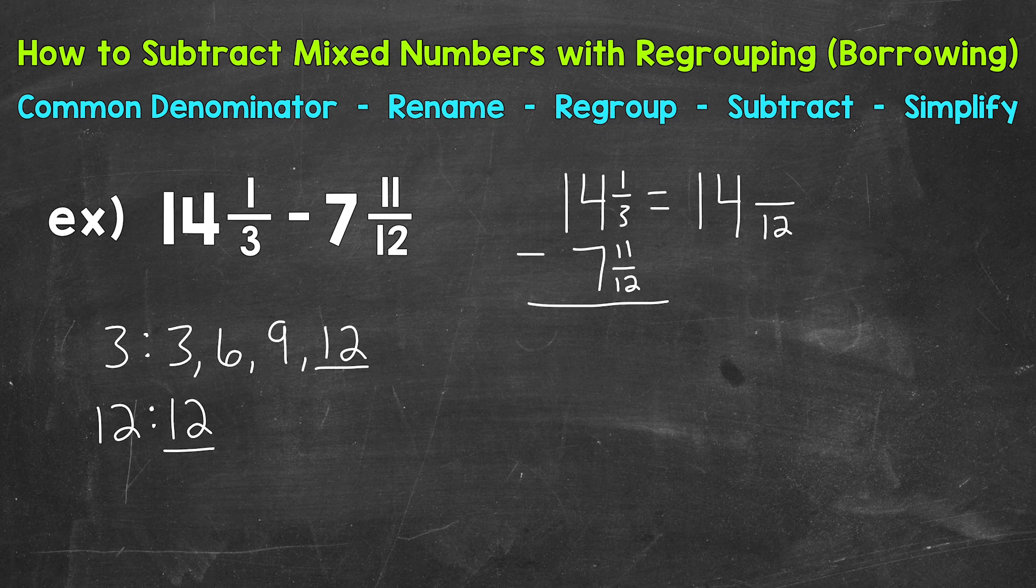So how do we get 3 to equal 12? Well, 3 times 4 is 12. Whatever we do to the bottom, we must do to the top in order to keep this equivalent. So 1 times 4 is going to give us 4.